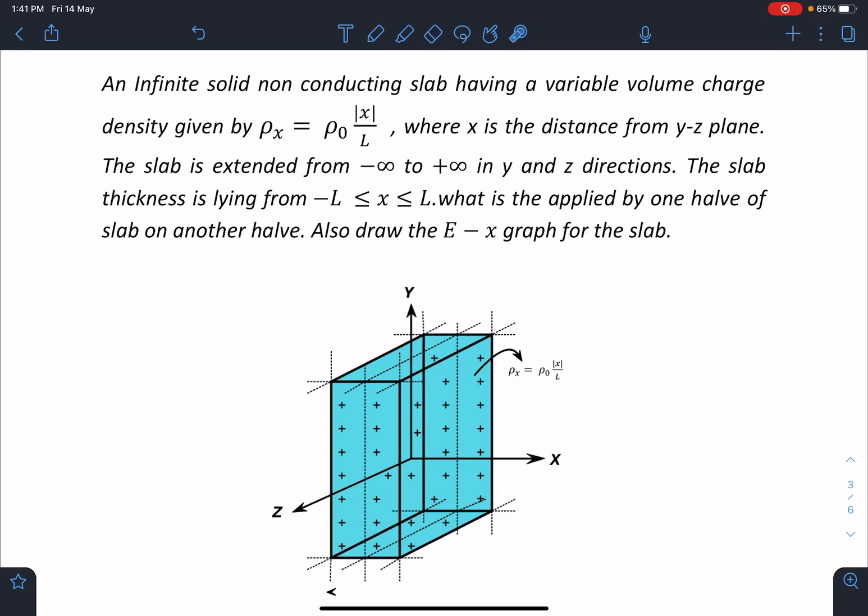The slab thickness is lying from x coordinate -L to L. What is the force applied by one half of the slab on another half? Also draw the E-x graph. Here I forgot to write 'force' - what is the force applied by one half of the slab on another half?